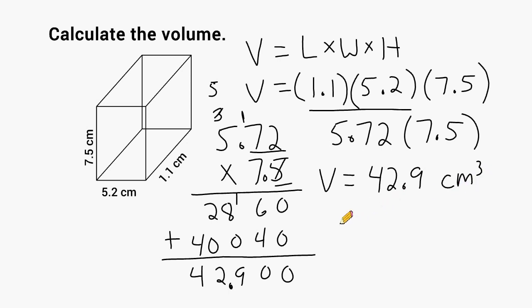All right. So we just reviewed how you multiply decimals together and where the decimal point goes in your answer, and we used decimal multiplication to find the area of a rectangle and a triangle and also to calculate the volume of a rectangular prism.